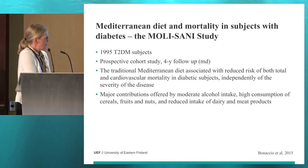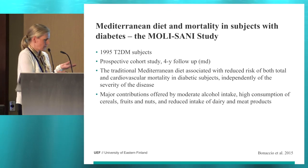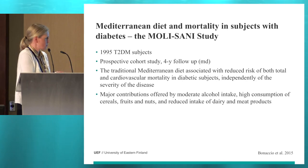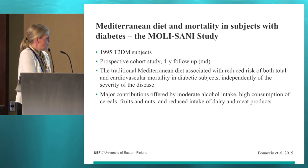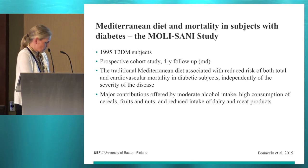This was independent of the severity of the disease — they looked at those subjects who had frequent hypoglycemia and so on, and there was no difference between the groups. The major contributions in the diet were offered by moderate alcohol intake, high consumption of fruits and nuts, and reduced intake of dairy and meat products.